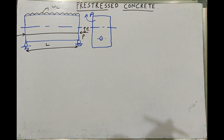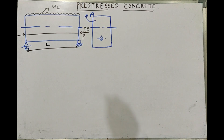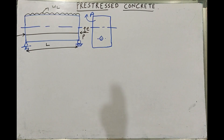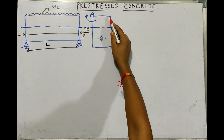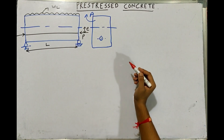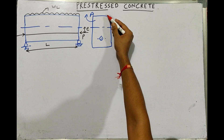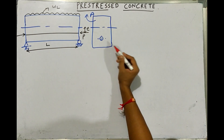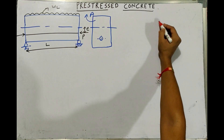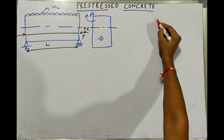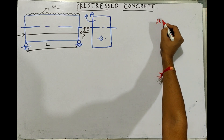When we say that we have to analyze this beam, what do we mean? By analysis, we mean that we have to find out the stresses at the extreme fibers of the beam. That is, we have to find sigma top and sigma bottom. What are the stresses acting on this system?